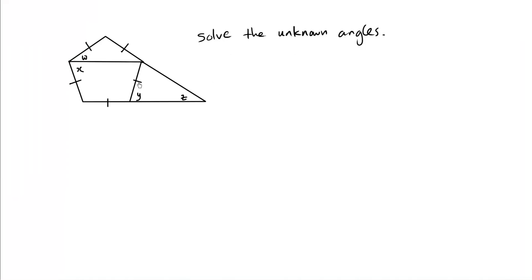Let's solve for the unknown angles. We have a nice five-sided shape here, which is a pentagon, and a triangle on the side. We know that this is a perfect pentagon because all of these markings indicate that the sides are the same length. Now we have no actual given angle, so we have to figure some things out here.